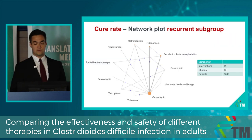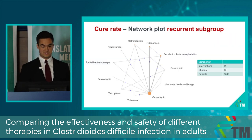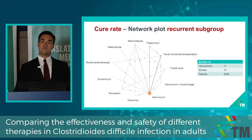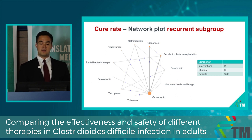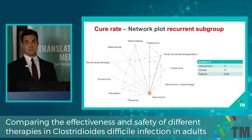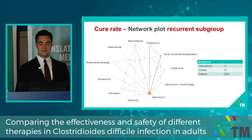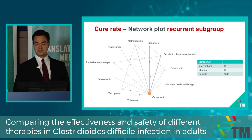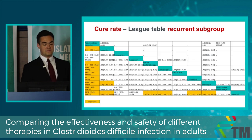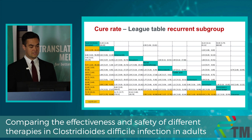Now let's see what the situation is in the recurrence subgroup. For this analysis, we included only those studies which included patients who suffered from recurrent C. diff infection. This is the network plot — we included 11 interventions from 10 studies, and more than 10,200 patients were included.